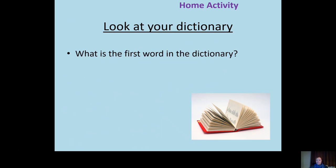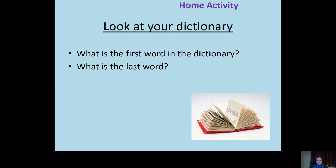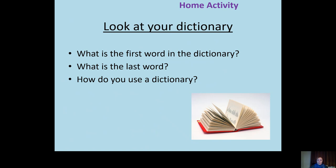Here's a nice home activity: look at your dictionary and find the first word and the last word. Getting used to the front and back of the book. How do you use a dictionary? You go with the first letter first, knowing pages go in alphabetical order. If you're looking up 'watch' beginning with W, are you going to look at the front or towards the back? It's about using knowledge you already have. Ask your children these questions to check their understanding.